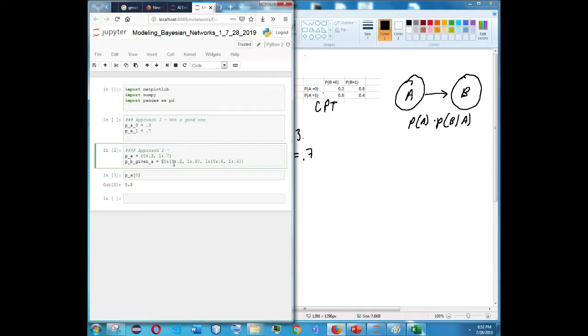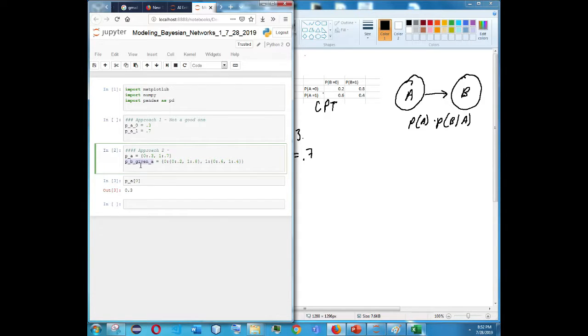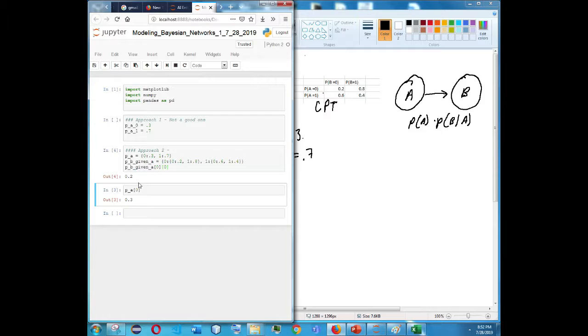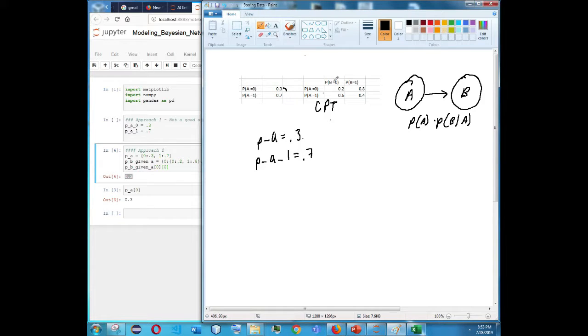So you'll notice that these numbers are exactly the same as the one on this table, and that's obviously supposed to be the case. And then from here we could call on P of B given A. If A was 0 and B was 0, we could print that out and you'd get 0.2. So this is a pretty interesting approach, it's a lot better than the first one. But when we have to multiply these things out, let's say I wanted to multiply and get all the joint distribution.